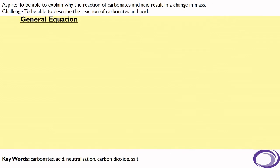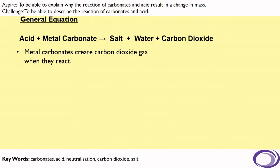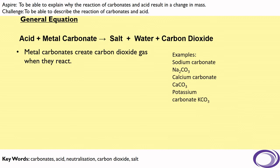Now, the general equation for the reaction of carbonates with acid is acid plus metal carbonate forms salt and water, and also carbon dioxide gas is produced. Now, some examples of metal carbonates are sodium carbonate, calcium carbonate, and potassium carbonate.